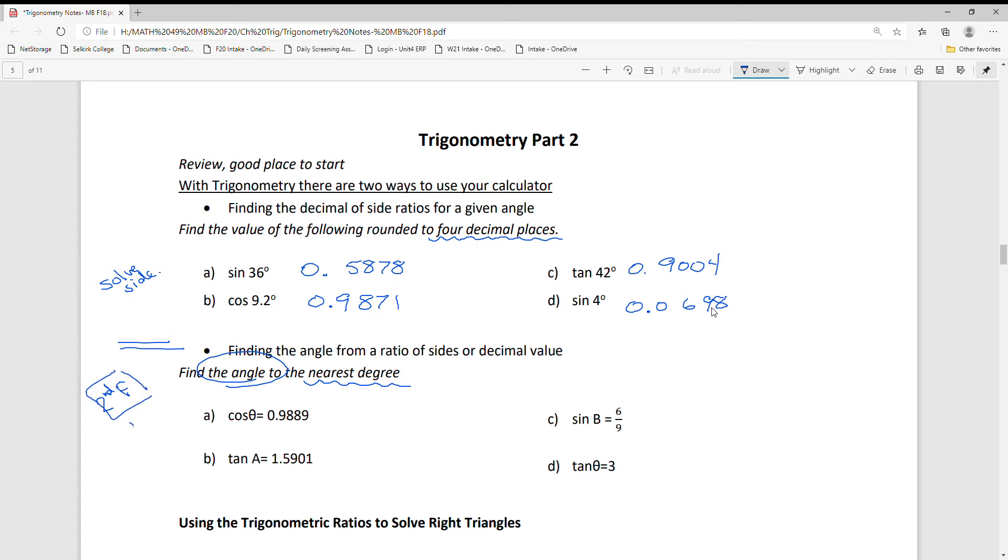Remember some of you had IN or INV as that button to unlock the angle measurement. So your calculator will do the work for you. The angle here would be 9 degrees, angle A would be 58 degrees, and theta D would be 72 degrees.